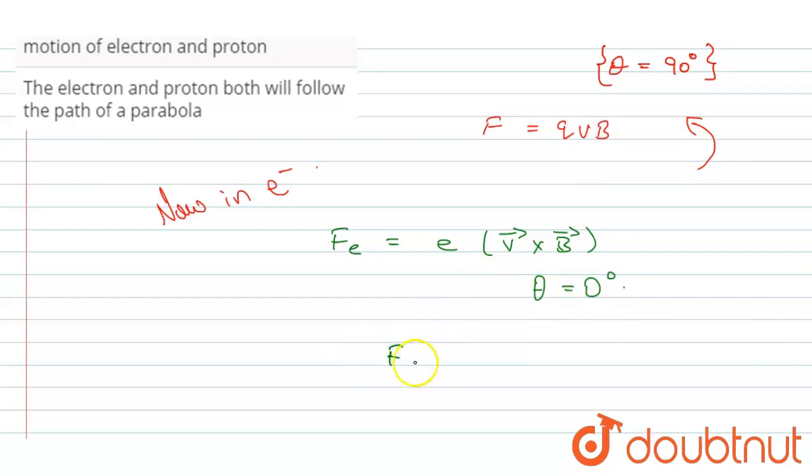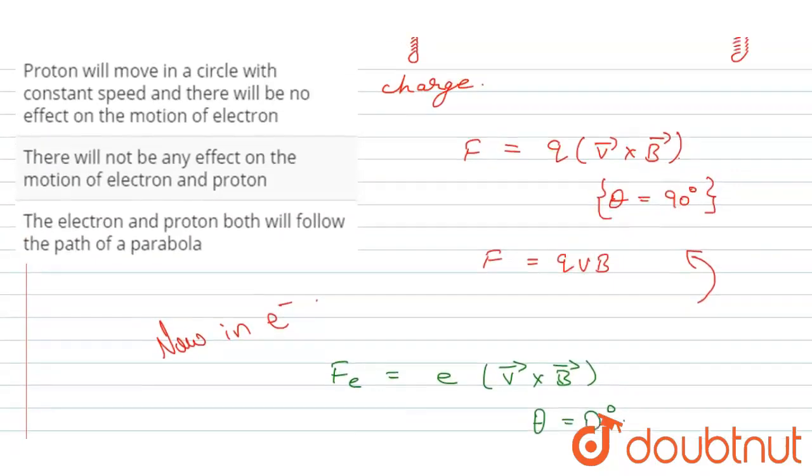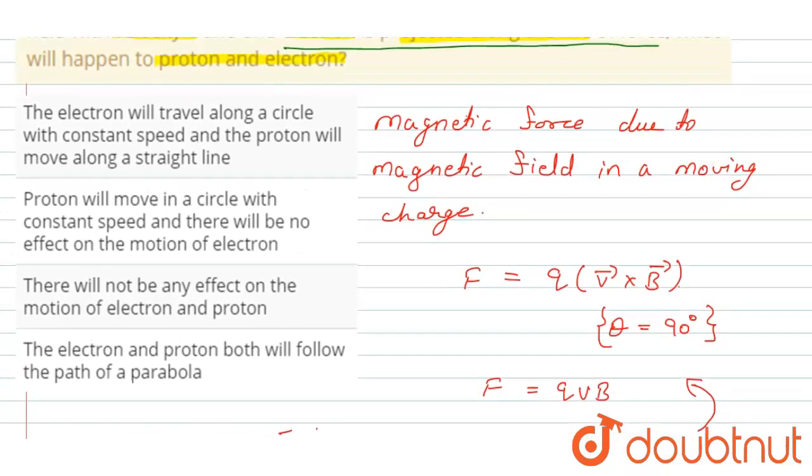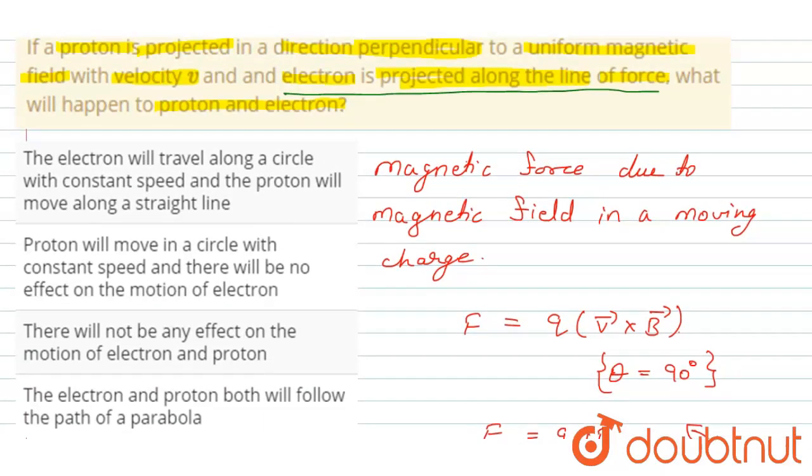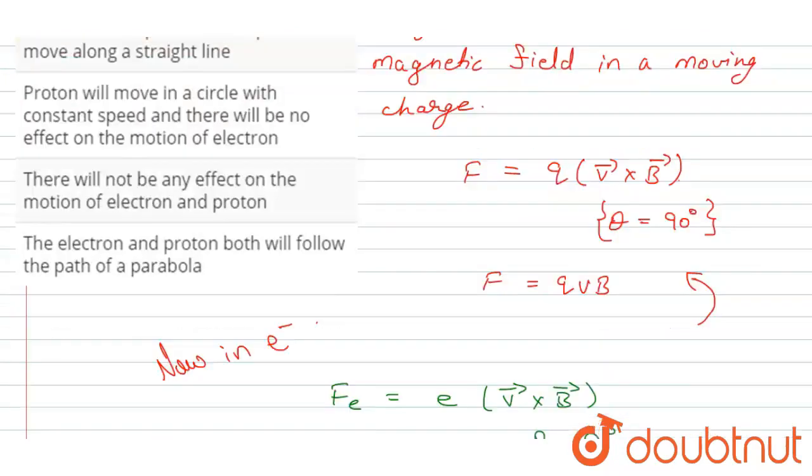So the force, magnetic force, will be equal to zero. It means the electron will be moving in a straight line. There will be no effect on the electron.